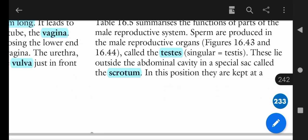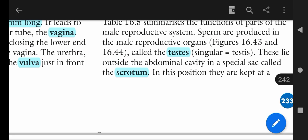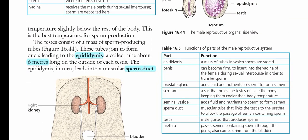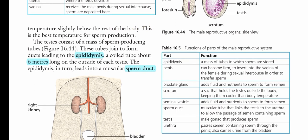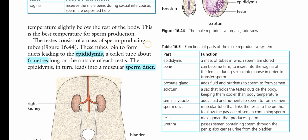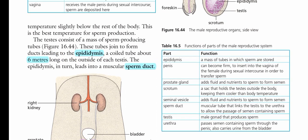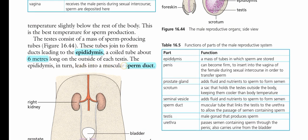The testes lie outside the abdominal cavity in a special sac called the scrotum. In this position they are kept at a temperature slightly below the rest of the body, which is the best temperature for sperm production. The testes consist of a mass of sperm-producing tubes that join to form ducts leading to the epididymis — a coiled tubule about six meters long on the outside of each testis.